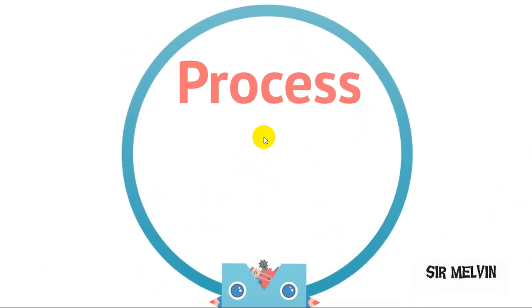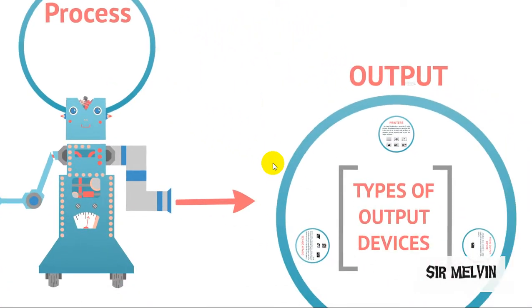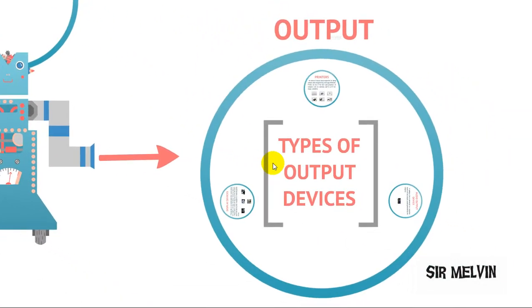In the processing stage, the computer itself processes the input directly through computer hardware, including the CPU, RAM, and other hardware components to process the data, which will then become the output.